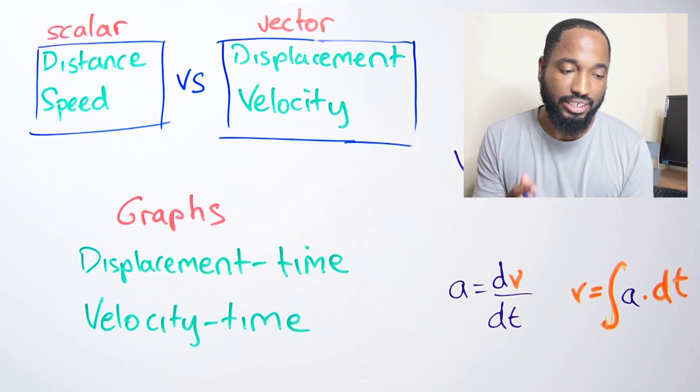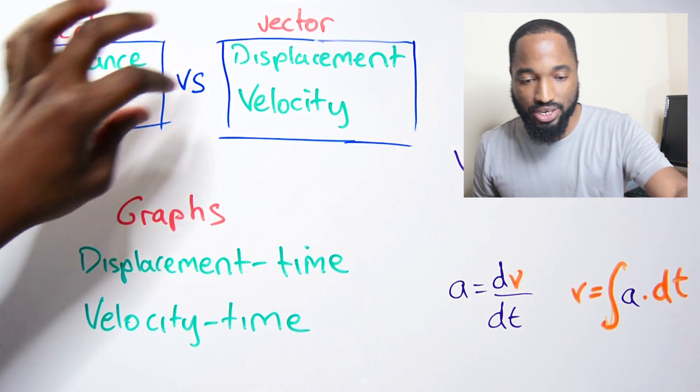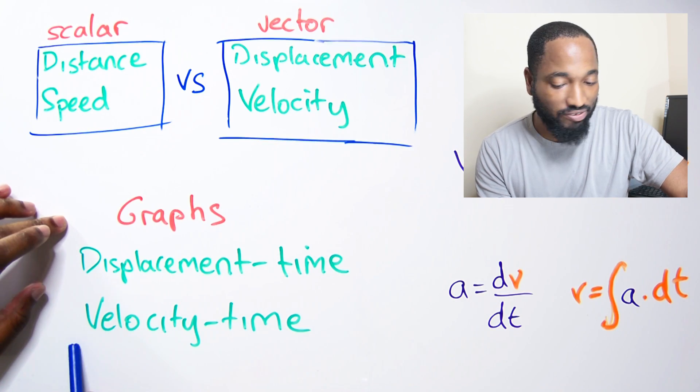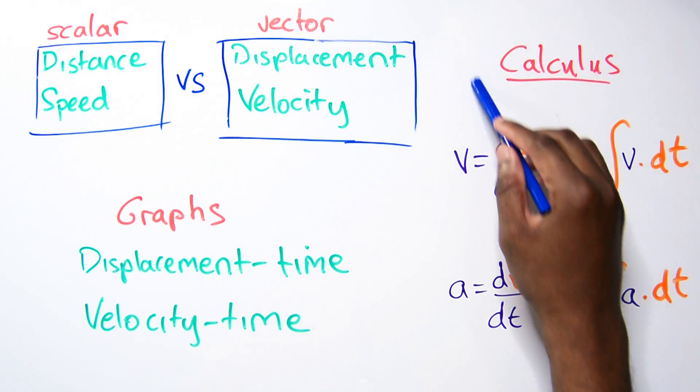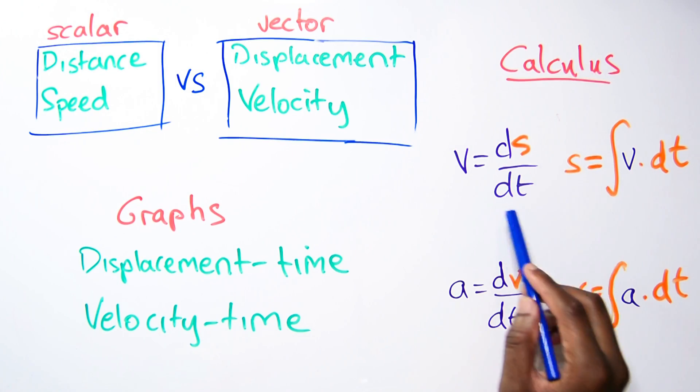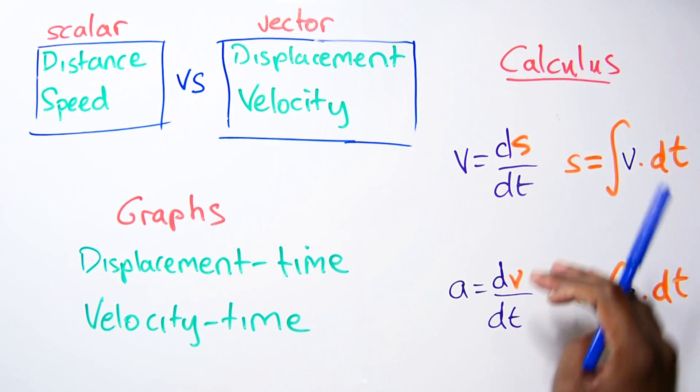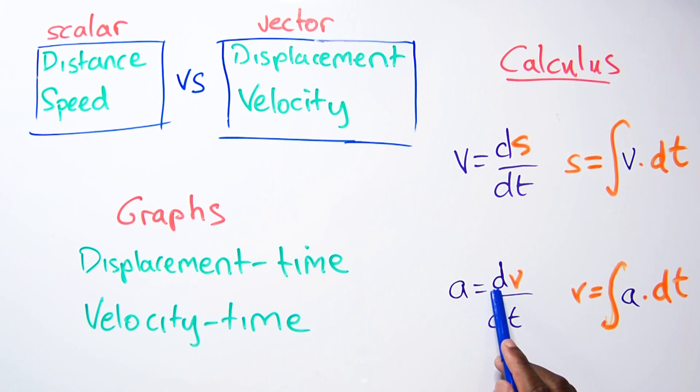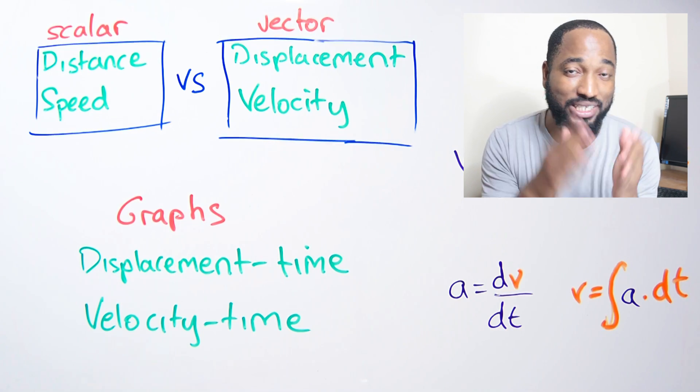Before we wrap up this video on kinematics, here are the important takeaways: scalar quantities (distance, speed) versus vector quantities (displacement, velocity). Know your graphs: displacement-time graphs and velocity-time graphs. The calculus: velocity is ds/dt (the differential of displacement) and displacement equals the integral of velocity. Same for acceleration and velocity: acceleration is dv/dt and velocity is the integral of acceleration. Know your units: displacement is meters, velocity is meters per second, acceleration is meters per second squared.